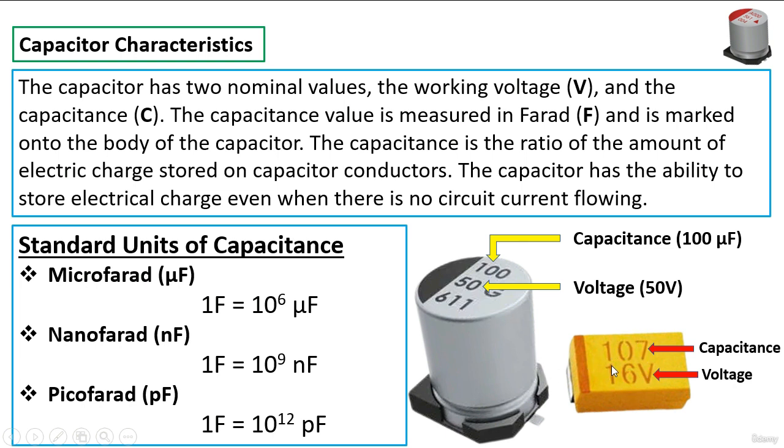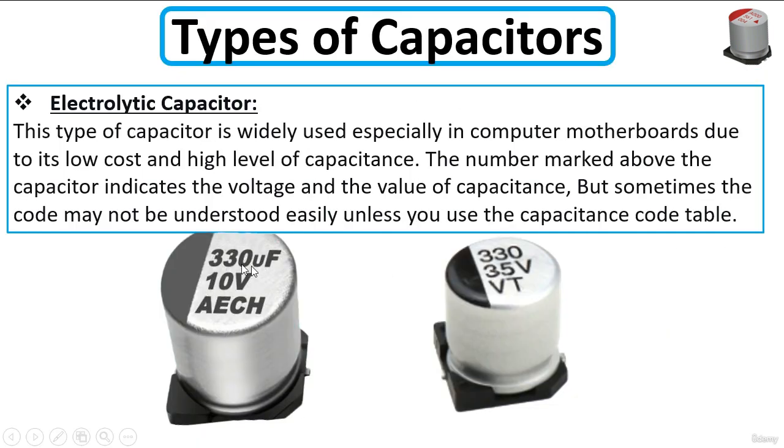Basically, these two kinds of capacitors are polarized capacitors. As you can see here for these two electrolytic capacitors, the code is clear and evident. We have 330 microfarad and 10 volts, the working voltage.